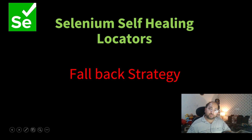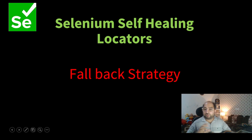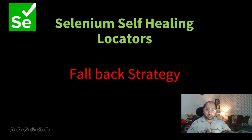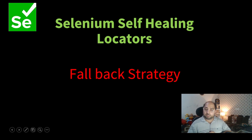So what is it all about? Self-healing locators is a term by which we can avoid the flakiness in our UI automation suite. When we work with UI automation, we face the challenge of locators getting changed. As a result, our test suite starts failing. In order to fix it, we need to replace the locators with new ones — this is like a pain or rework. By using this self-healing locators strategy, we can avoid this particular work.